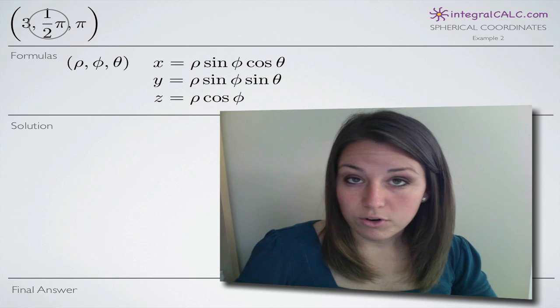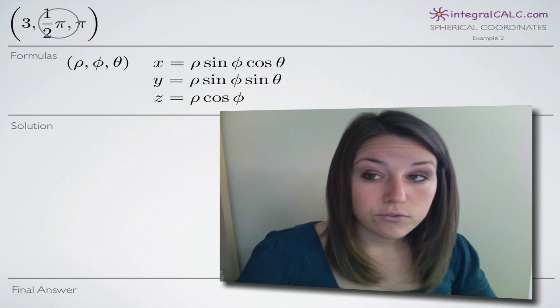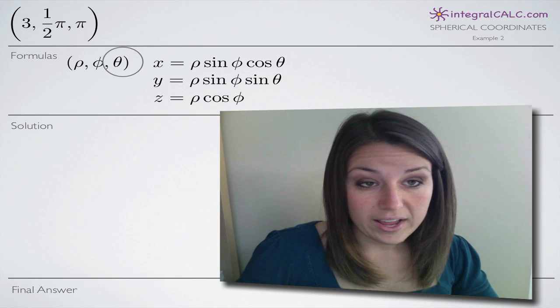Normally with rectangular or Cartesian coordinates, we're given x, y, z. In spherical coordinates, it's rho, phi, and theta.